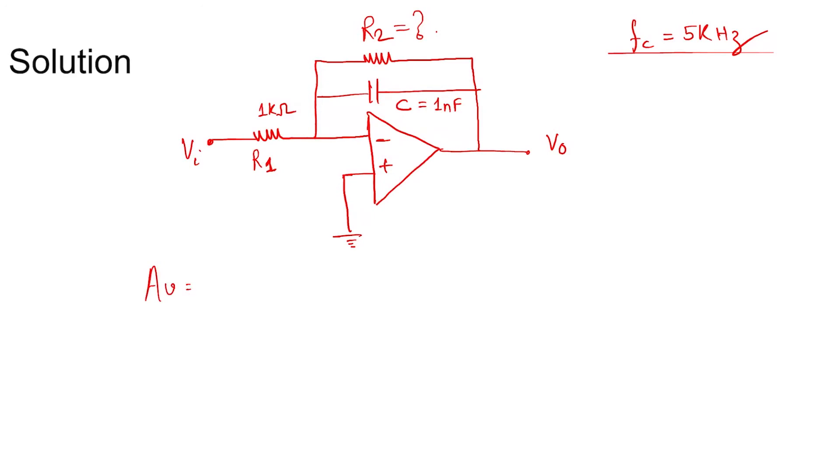Hence we get the gain as R2/R1 divided by √(1 + ω²C²R2²).